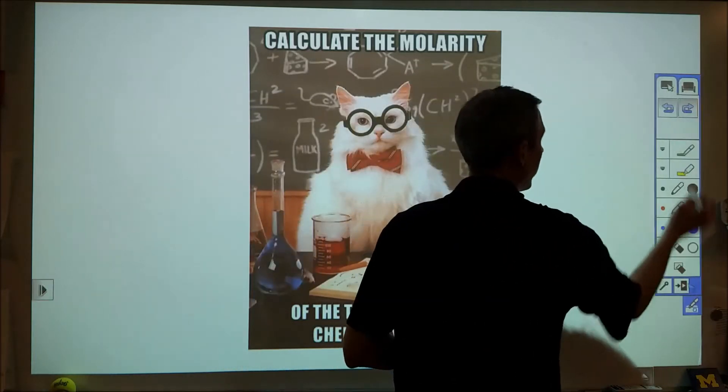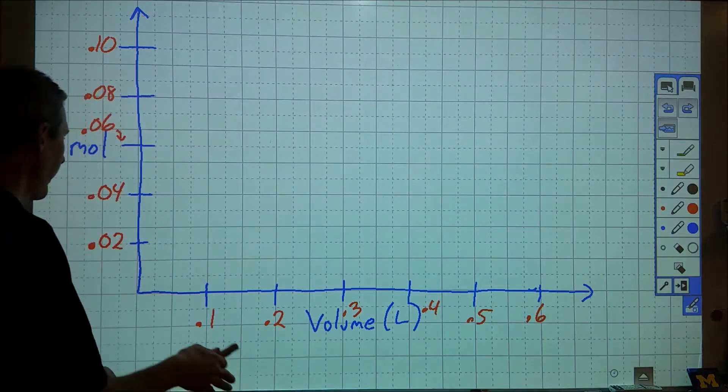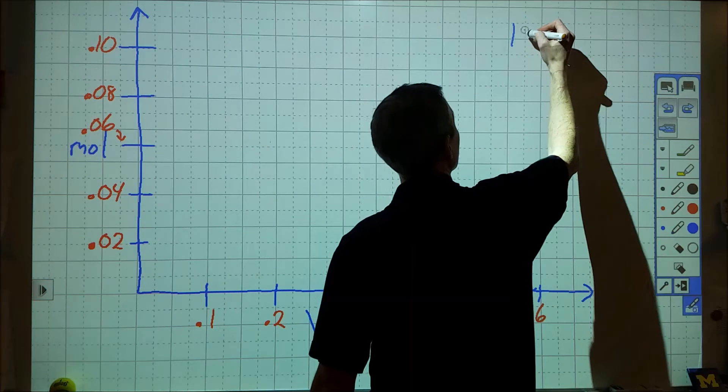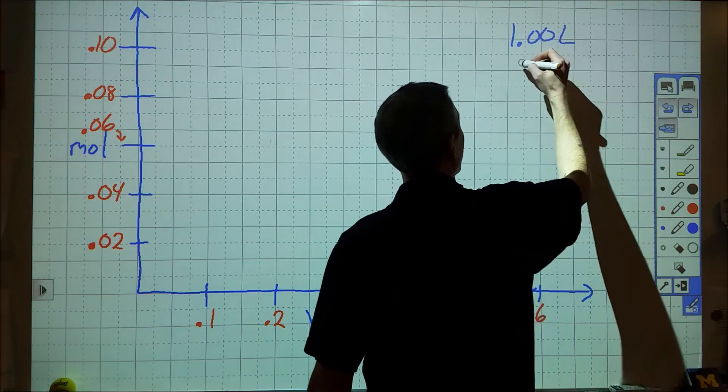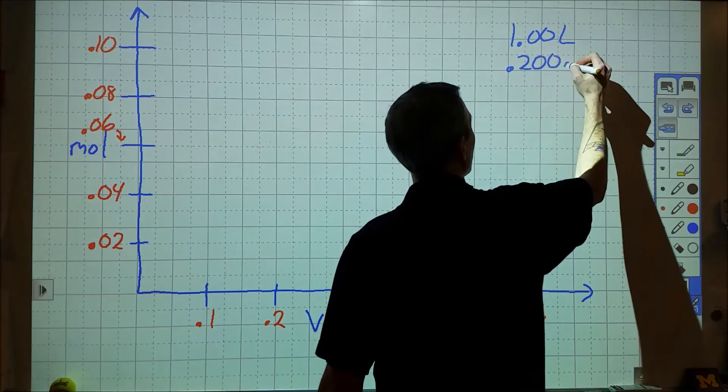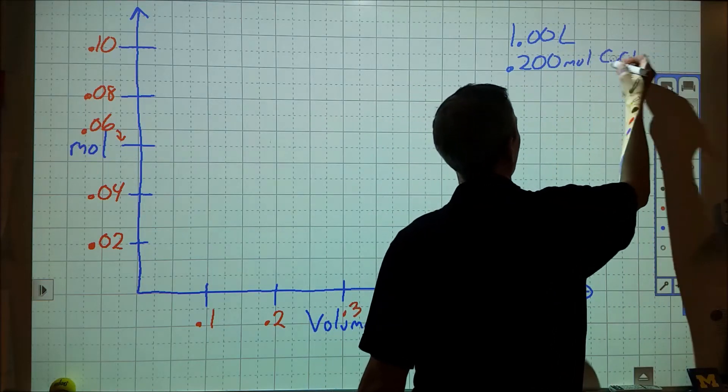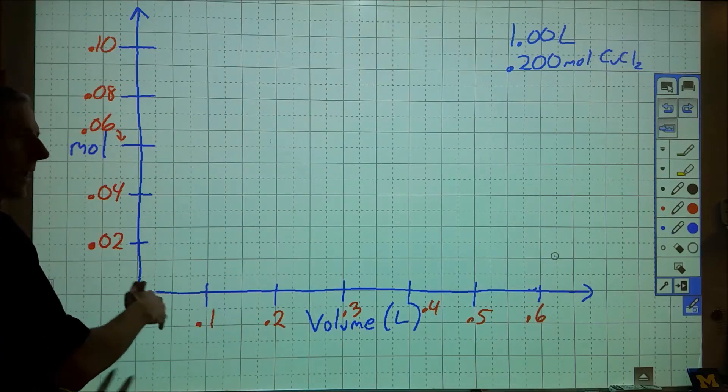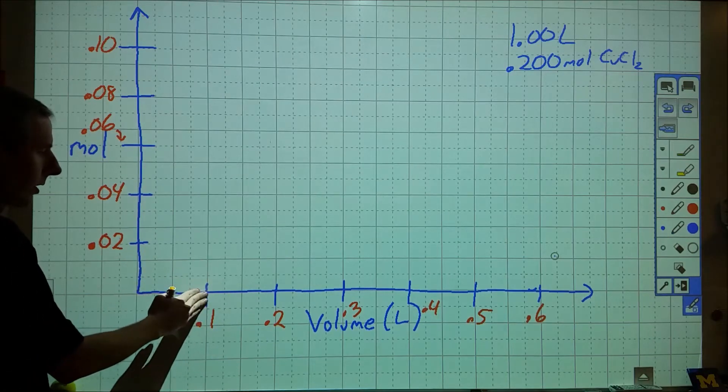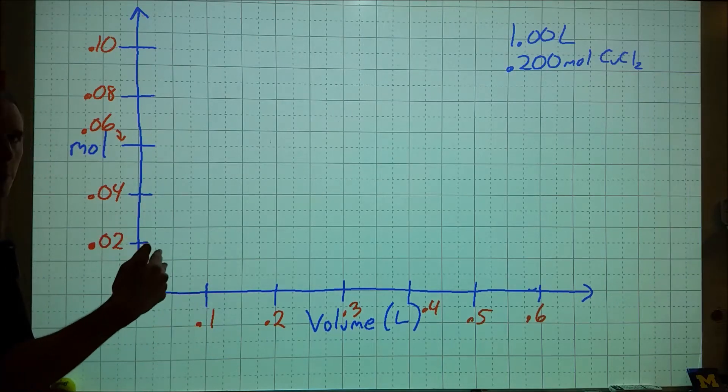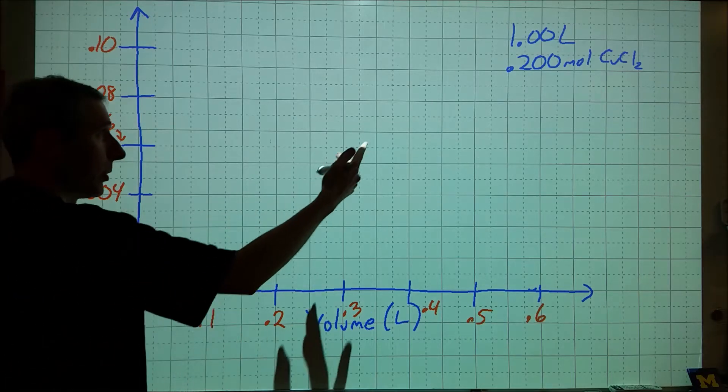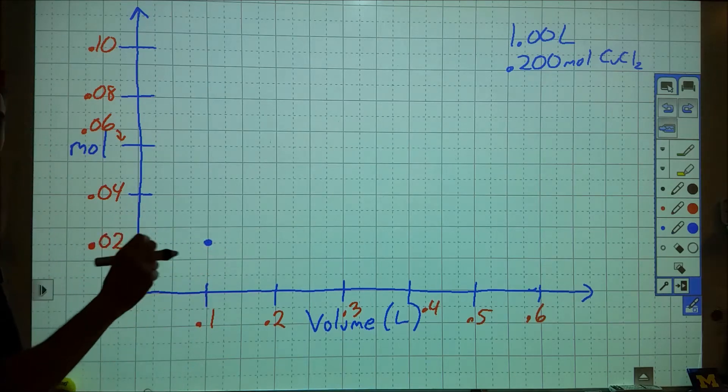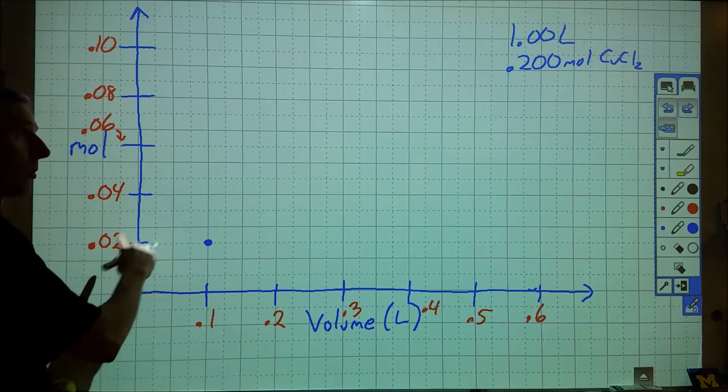So what I want to do is take all of that data and pull together and plot. And so we started with one liter of solution, 1.00 liters, and we had 0.200 moles of copper chloride. What I want to do is plot this. So I have three data points. I had at 0.1 liters or 100 milliliters, I had 10% of that liter. So if I had 0.2 moles total, then I would have 0.02 moles at that particular point. So this represents my 100 milliliter container.